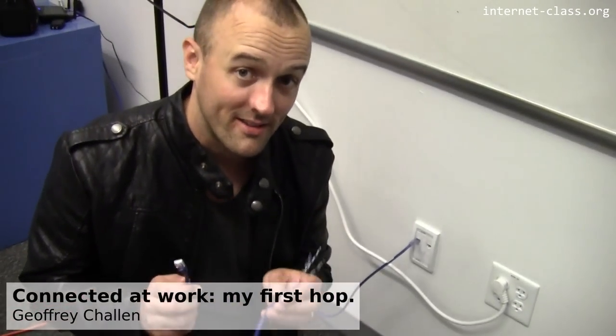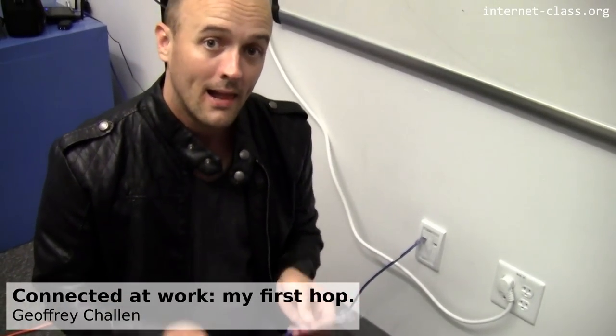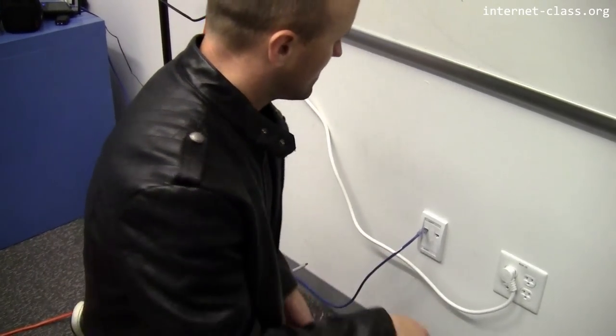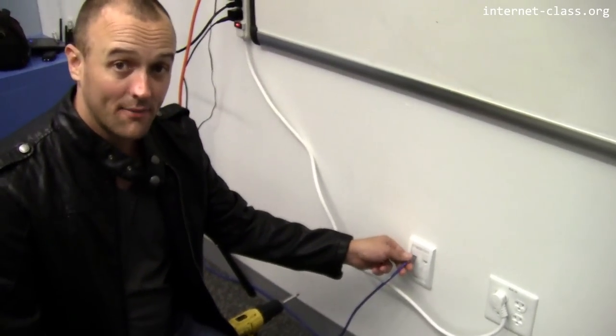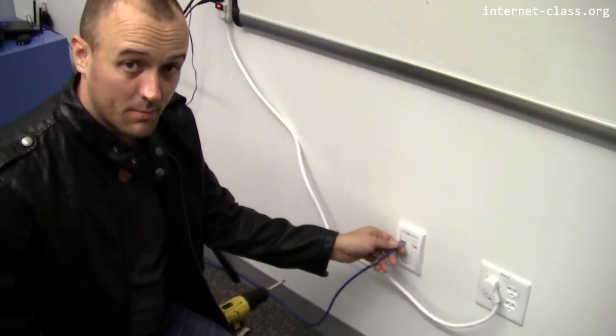Alright, so now that we know a little bit more about this cable itself, this Category 5 cable that's used throughout this building, let's start to play that game of follow the cable. This cable would be plugged in right here. I actually have a wireless router that's plugged in right here. This cable goes into the wall, disappears into the wall.